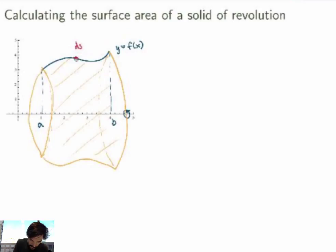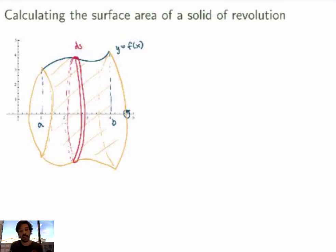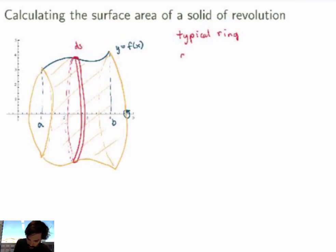I'm going to rotate that small segment about the axis, and what I get is a little ring. These rings are going to be my slices. The idea is to first calculate the area of a typical ring — which I'll call dSa, for surface area — and then add these up to get the total surface area of the solid.